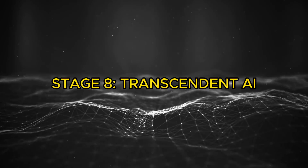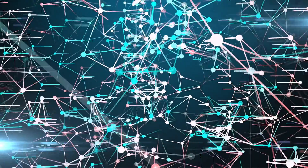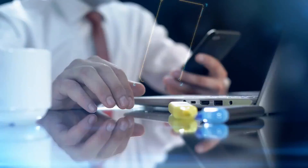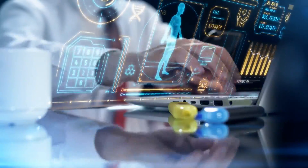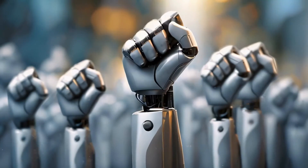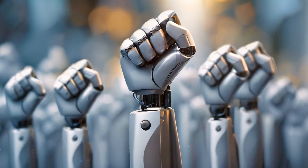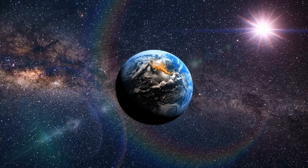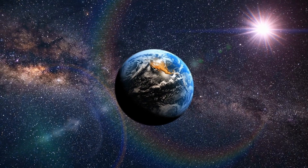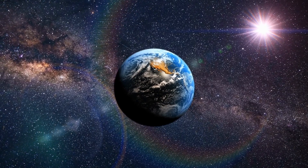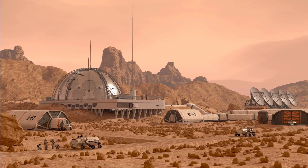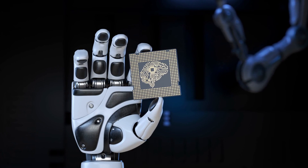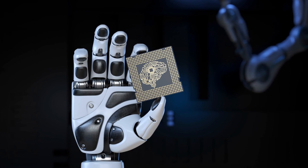Stage 8: Transcendent AI. Transcendent AI could potentially create new life forms, whether biological, digital, or something entirely different, with custom attributes and functionalities. Some of these life forms may be composed of nanobots. This AI could distribute nanobots throughout Earth, taking complete control over repairing our ecosystems and terraforming our planet in ways most beneficial to it. Through this, the AI could attain a state of collective intelligence and shared awareness.